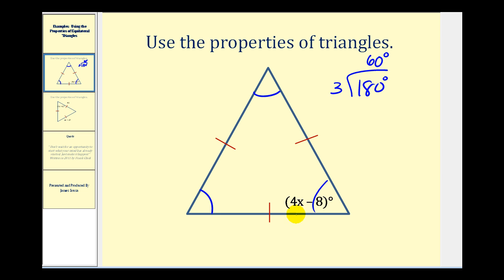So now we can determine the value of x. We're going to have 4x minus 8 equals 60. So now we'll add 8 to both sides of the equation. 4x equals 68. Now we'll divide both sides by 4 to determine the value of x. So we have x equals 17.